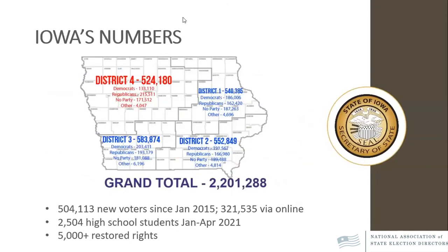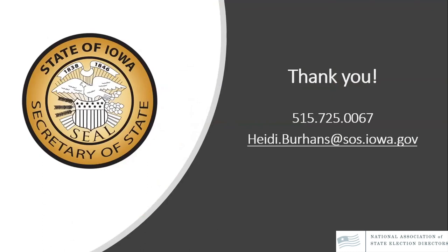Our final slide shows Iowa's voter registration numbers. We have well over 2 million registered voters in Iowa. Since January 2015, we've registered a little over half a million new voters, and over half of those registered through our online voter registration portal. Over 2,500 high school students were registered at the beginning of this year, and we'll start a new Carrie Chapman CAT program this fall. Since the Governor signed her executive order last August, over 5,000 persons have had their voting rights restored.